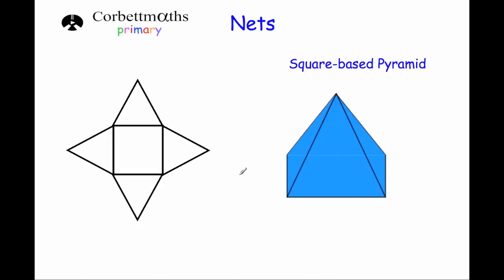Our next 3D shape is a square-base pyramid, and this is the net of the square-base pyramid, where you've got the square on the base and the four triangles — 1, 2, 3, 4 — which would fold up and meet up at the top of the pyramid. That would be the net of the square-base pyramid.